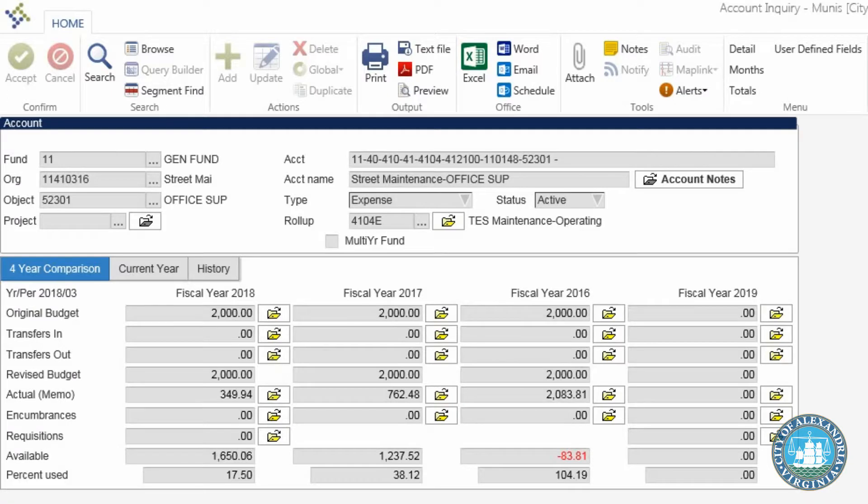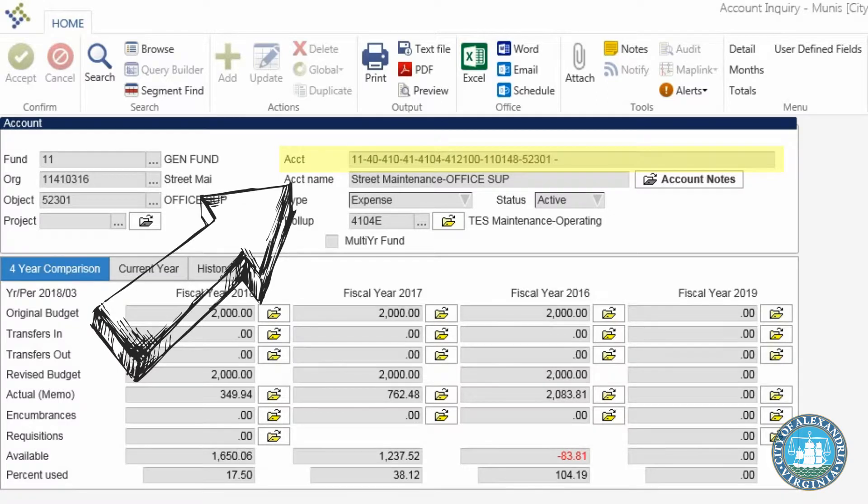The other side of the coin is the long string. And if we flip back over to that account inquiry search from before, we'll see it. See that gray field labeled... Well, that's the long string for TESS's street maintenance org's office supplies object. And though there's a lot going on in there, let's walk through the long string and see what we can understand.